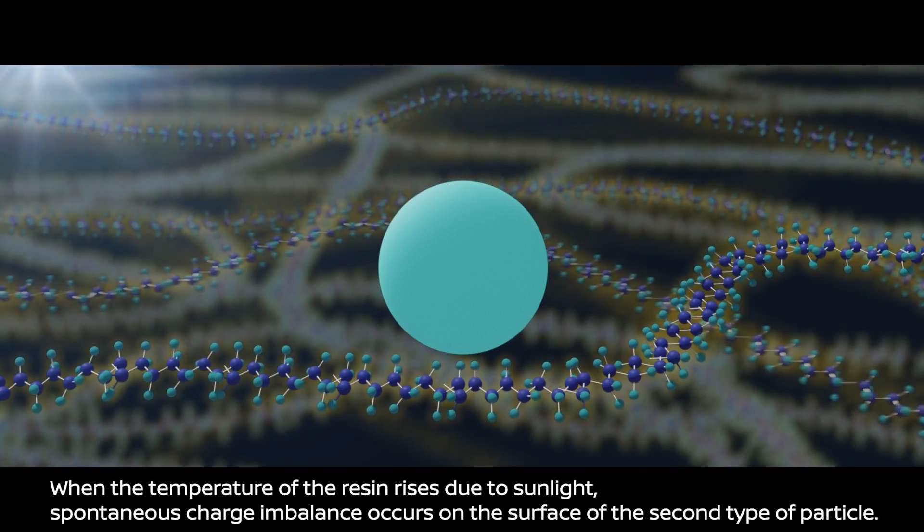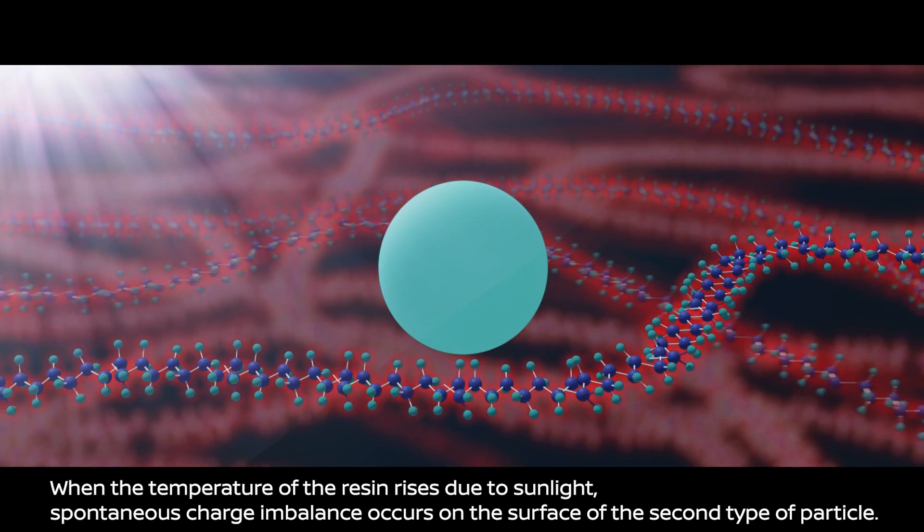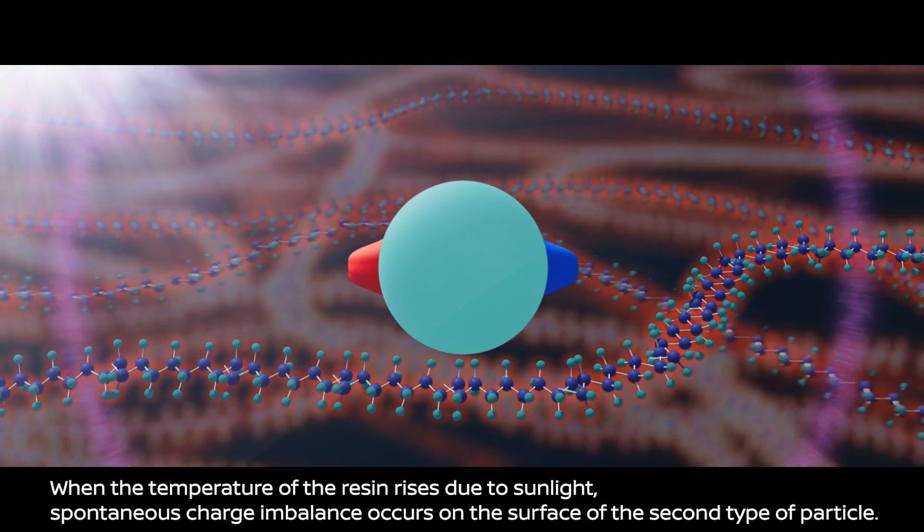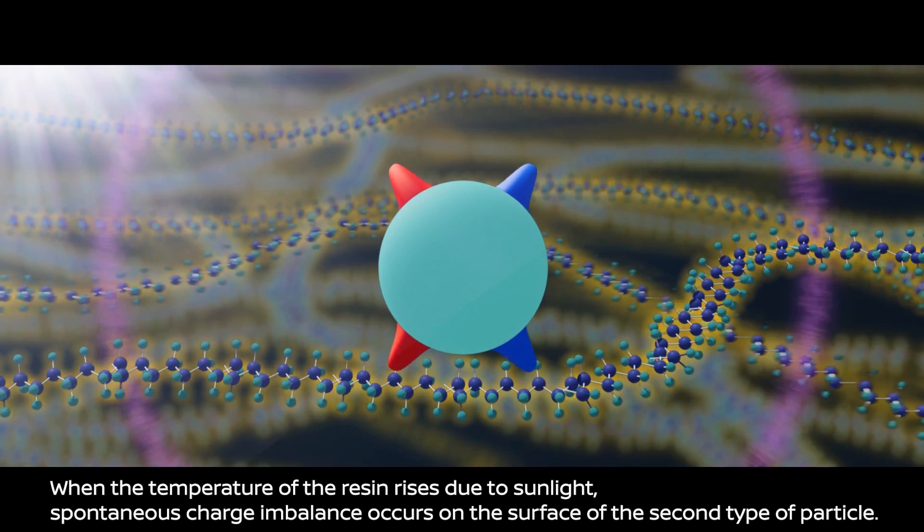When the temperature of the resin rises due to sunlight, spontaneous charge imbalance occurs on the surface of the second type of particle.